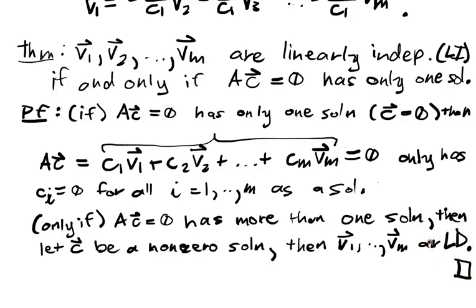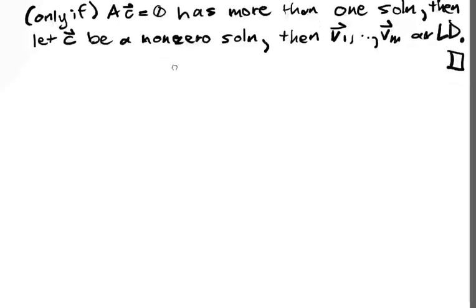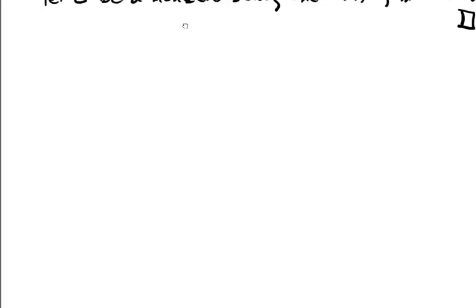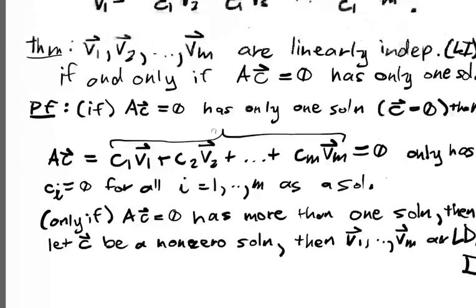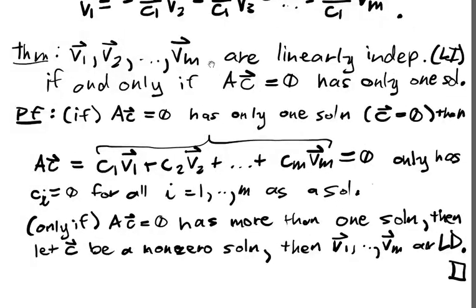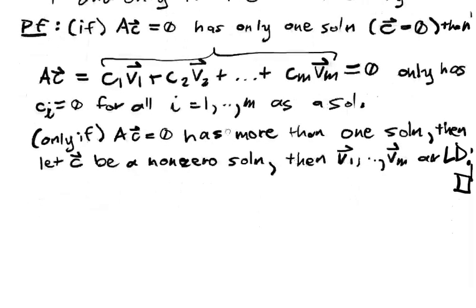So this is a nice simple characterization in terms of things we know about matrices. And this theorem immediately allows us to say something in terms of the rank of this matrix, so basically we can characterize linear independence in terms of the rank of this matrix A, which is really kind of nice because that means we can compute things easily.